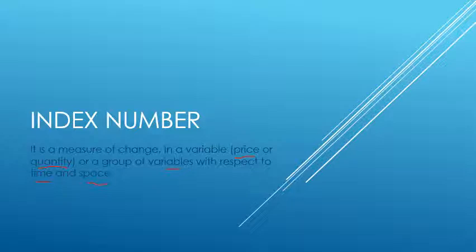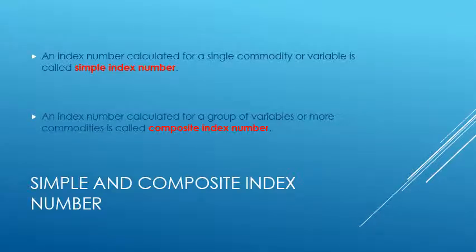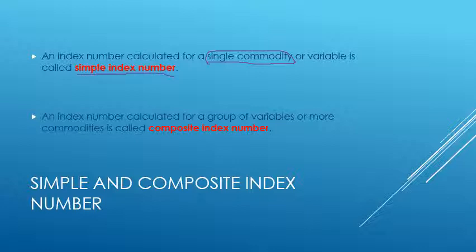This is the definition in the book. I will also share some videos on index numbers with you. There are two kinds of index number. An index number calculated for a single commodity or single variable is called a simple index number. The second one is an index number calculated for a group of variables or group of commodities, and it is called a composite index number.